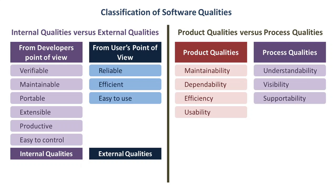Supportability is the capability of supporting a software system over its whole product life. Acceptability is testing to see if the software is complete as per the requirement — this allows us to determine if the system is eligible for delivery.